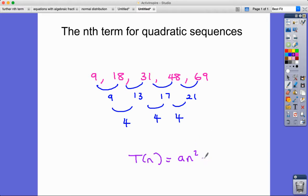Specifically, it's going to be of the form an² plus bn plus c. And it's our job to work out the values of a, b, and c.